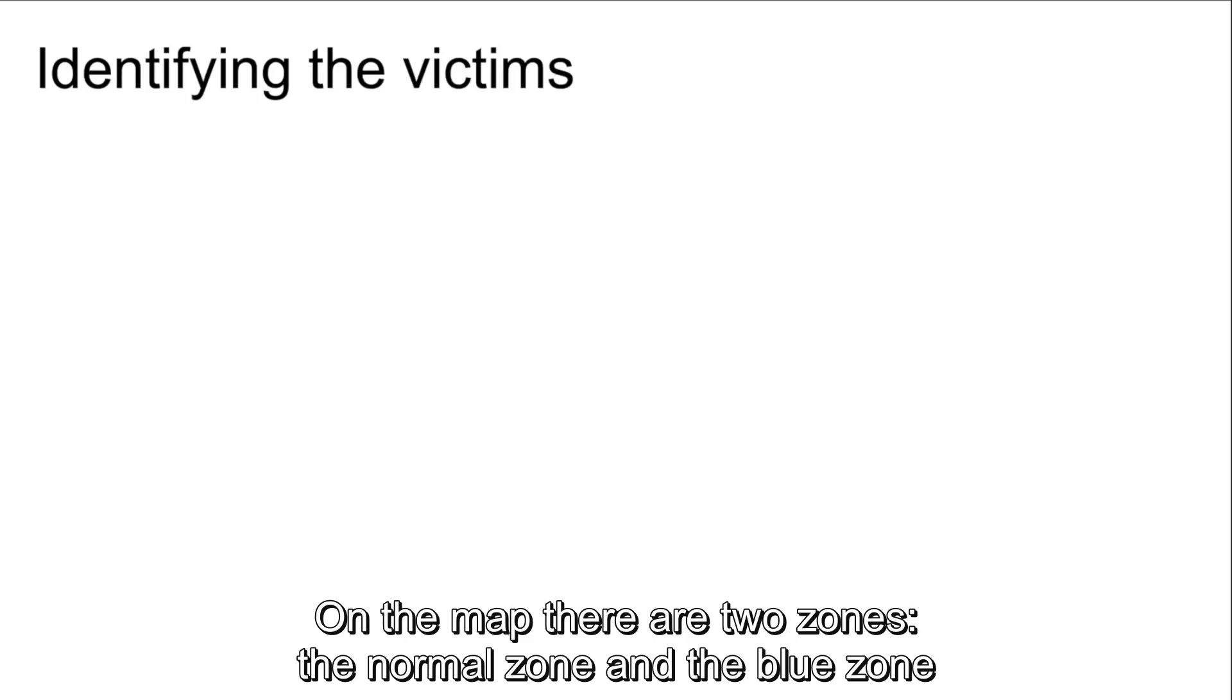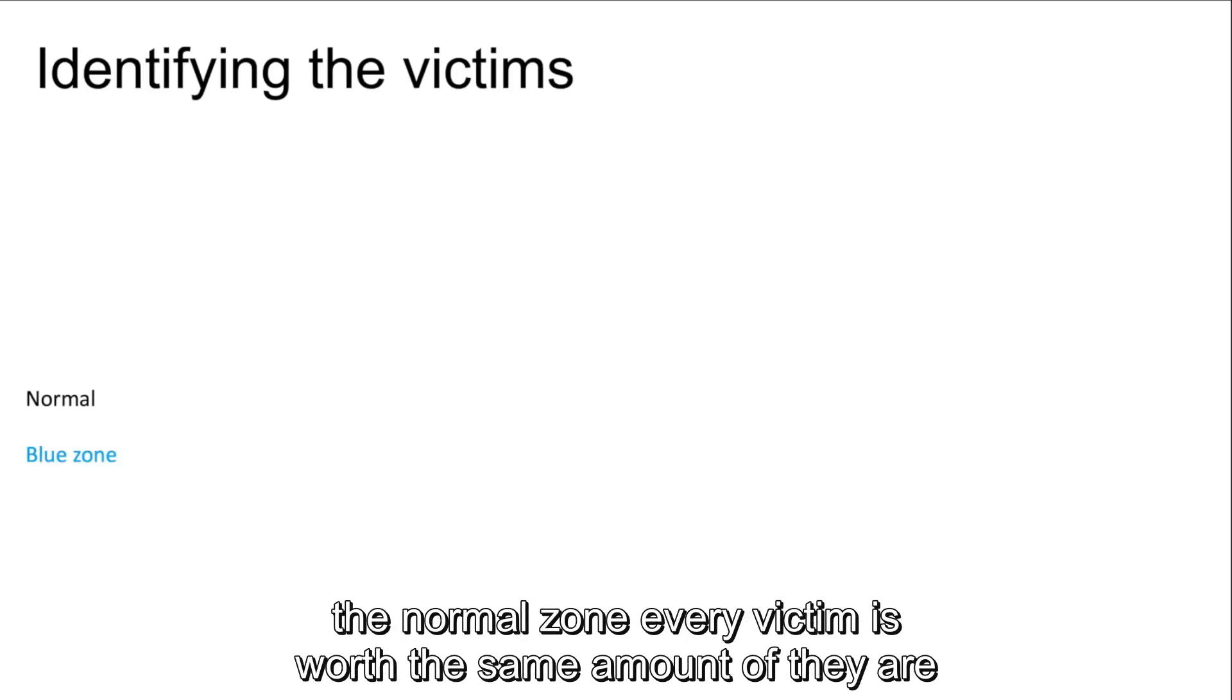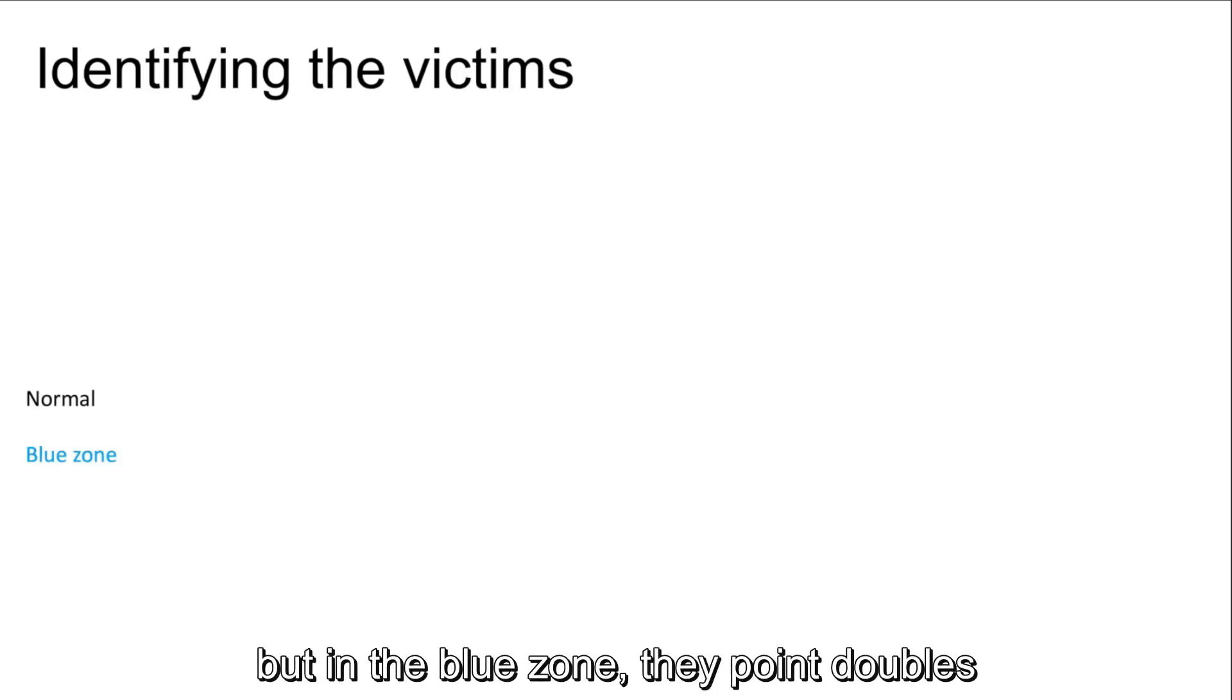On the map, there are two zones: the normal zone and the blue zone. In the normal zone, every victim is worth the same amount that they are, but in the blue zone, their point doubles.